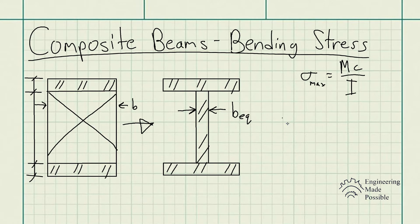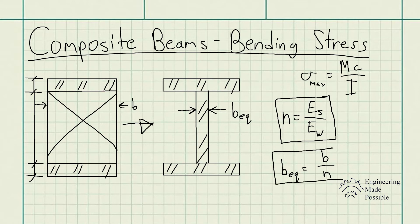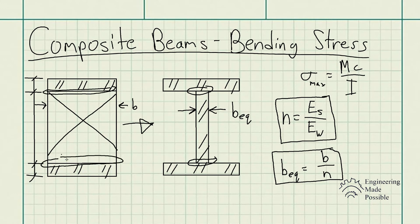The key quantity you use is called the transformation factor N, which equals the modulus of elasticity of the strong material (S) divided by the modulus of elasticity of the weak material (W). The equation for B_equivalent — to transform the weak material into the strong one — is the original width B divided by the transformation factor N, which is the ratio of the moduli of elasticity.